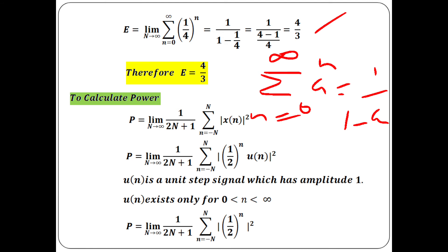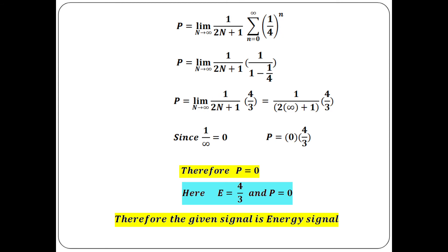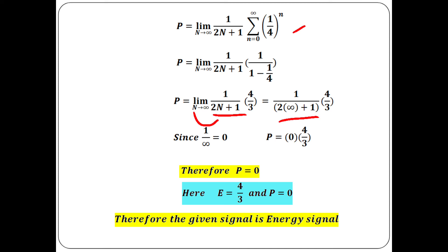To calculate power, write the power formula for a discrete-time signal. Since we have u[n], change the limit to 0 to infinity. (1/2)^n whole square gives (1/4)^n. Using summation formula we get 4/3, but we have 1/(2N+1) in the power formula. Substituting N = ∞: 1/(2·∞ + 1) = 1/∞ = 0. So 0 × 4/3 = 0. Since energy is finite (4/3) and power is 0, the given signal is an energy signal.